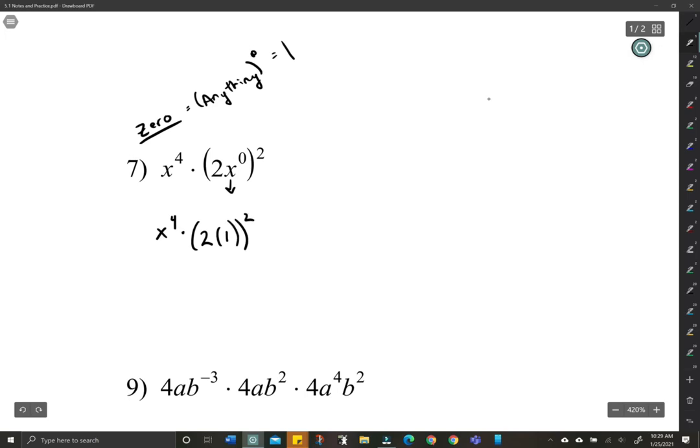x to the 0 is just 1 and then squared. Well, what's going on here? That's really x to the 4th times 2 squared, which means we just have 4x to the 4th. Anything to the 0 is 1, not 0. I see some common mistakes with that in the future.